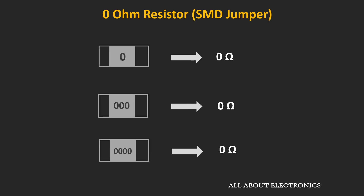In PCB assemblies, SMD jumpers are also used. Theoretically, the resistance of these SMD jumpers is 0 Ω. So whenever you find a code like '0' written on a surface mount resistor, it means the value of that resistor is 0 Ω.